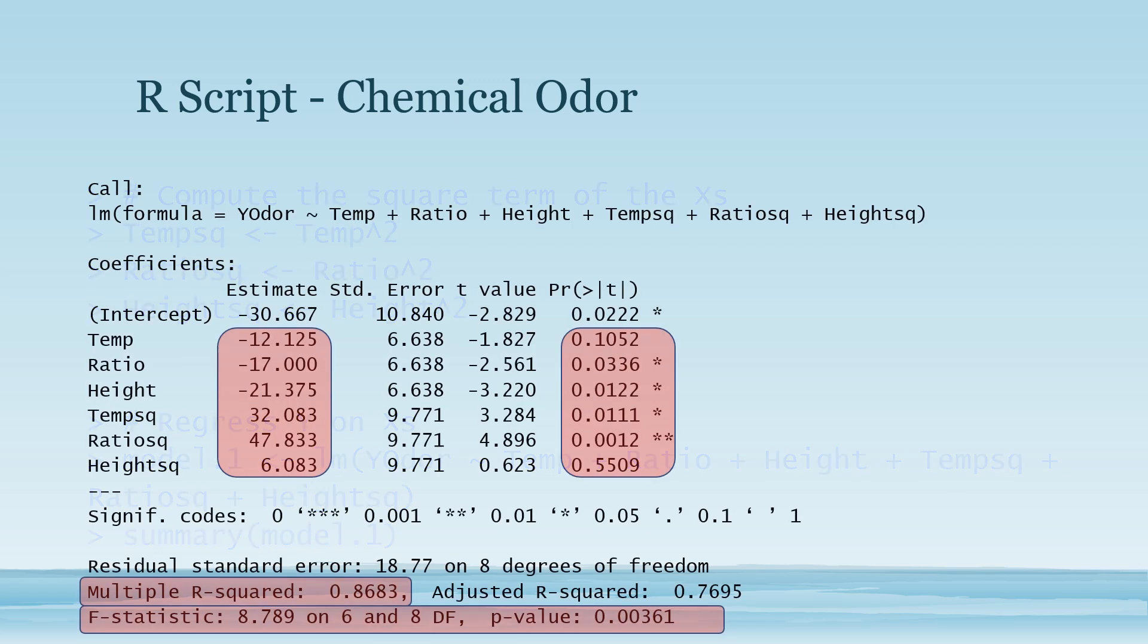Here we have six predictors: the individual predictor of temperature, ratio, and height, and the square terms of each of them. As you can see, ratio was significant, height was significant, temperature square was significant, and ratio square was significant.